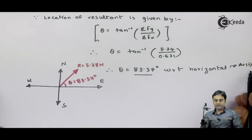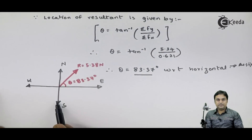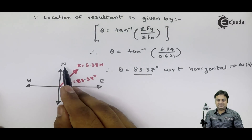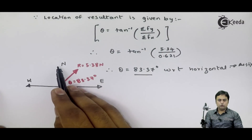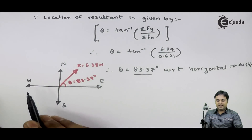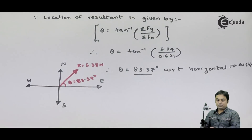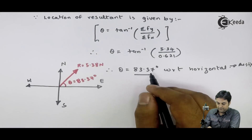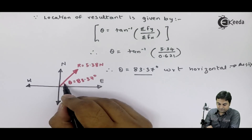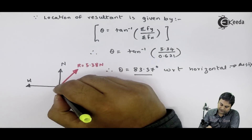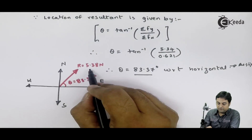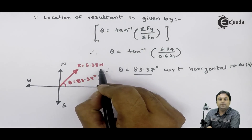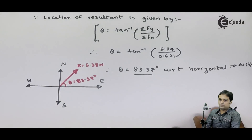We can also locate the resultant by drawing the compass axes — north, south, east, and west — and marking the inclination of 83.37 degrees. The value of the resultant is 5.38 Newton. With this, we have calculated the resultant and shown its location, completing the solution to the first problem.